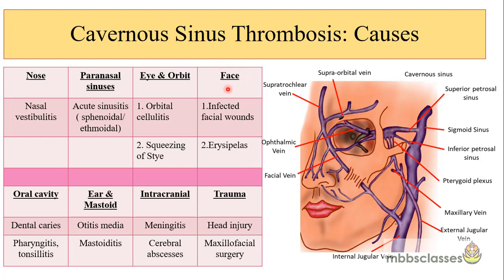Conditions of the face that can spread via the facial vein include infected facial wounds and erysipelas. Conditions of the oral cavity like dental caries, pharyngitis, and tonsillitis can also lead to cavernous sinus thrombosis. In the ear and mastoid, conditions like otitis media and mastoiditis can cause cavernous sinus thrombosis. The cavernous sinus communicates with the superior and inferior petrosal sinuses, and the labyrinthine veins open into the inferior petrosal sinus, bringing infection from the middle ear. Mastoid emissary veins may also spread infection from the mastoid air cells.